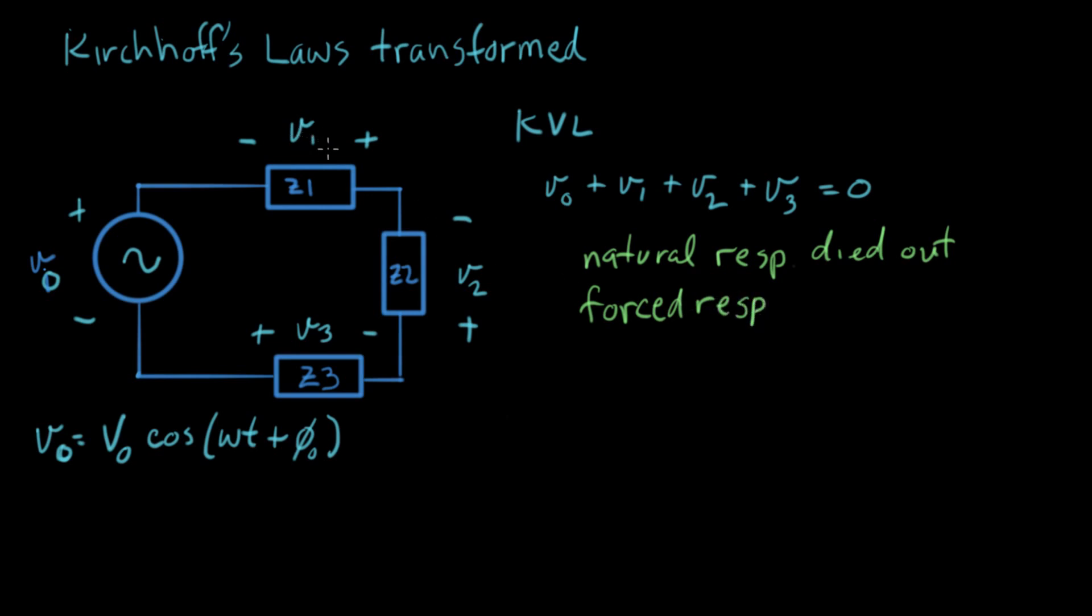We have three voltages. We know that all these voltages are gonna resemble the input voltage. They're all gonna be sinusoids. All the voltages here are gonna be AC sinusoids because the forcing function is a sinusoid.